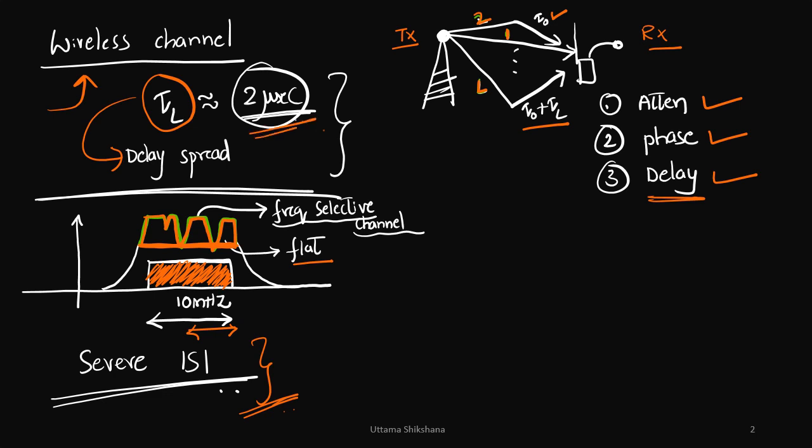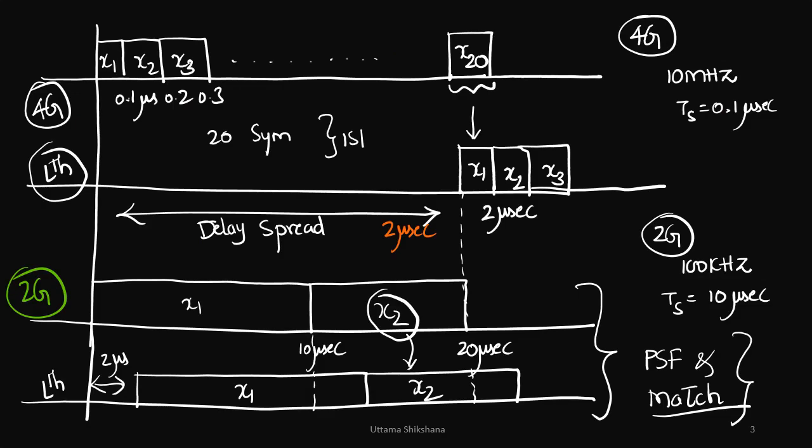Now consider 4G. We had considered 10 megahertz and the symbol duration is 0.1 microseconds, which means for a 0.1 microseconds symbol X1 is transmitted, then in another 0.1 microseconds X2 is transmitted, like that it goes on. Now this is the first path. In the last path L path, the symbol will be delayed by 2 microseconds and you will receive the first symbol at this point.